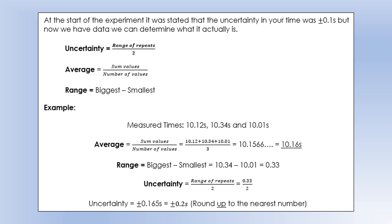With three readings, to get the average we add those three values together and divide by 3. That will give us a number with lots of decimal places, but since our times were all to two decimal places, the average is quoted to two decimal places. Our biggest repeat reading is 10.34 and our smallest is 10.01, so the range is the difference between those, which comes out as 0.33. The uncertainty is half the range, so that's 0.33 divided by 2 which comes out as 0.165.